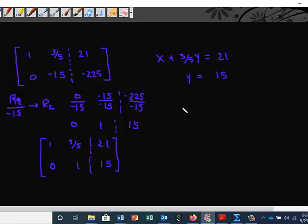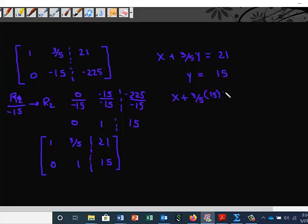Now, we'll convert this back to a system of equations. This will be x + (3/5)y = 21, and y = 15. Now we can use back substitution and substitute this back into the first equation here. This will be x + 9 = 21. We'll take -9 here and -9 there, so x equals 12.